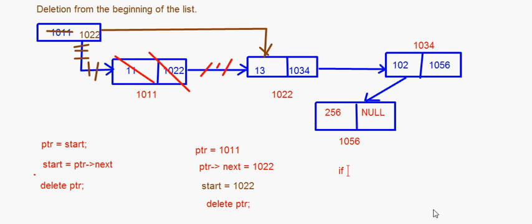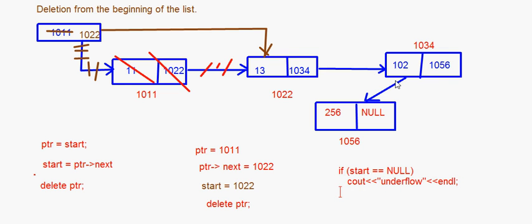After start equals ptr next, just write delete ptr, which physically deletes the node. This algorithm is only three lines. There can be one situation: if start equals null, it means the linked list is empty. In that case you output 'underflow' or 'linked list empty'. Underflow basically means the linked list is empty.